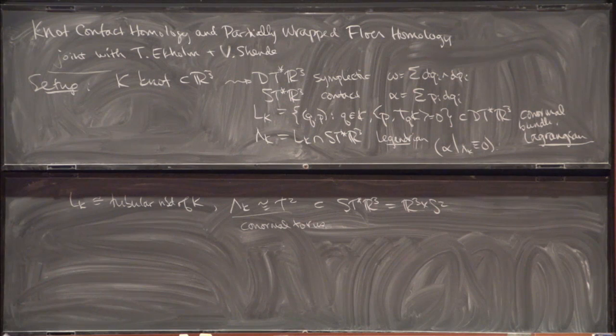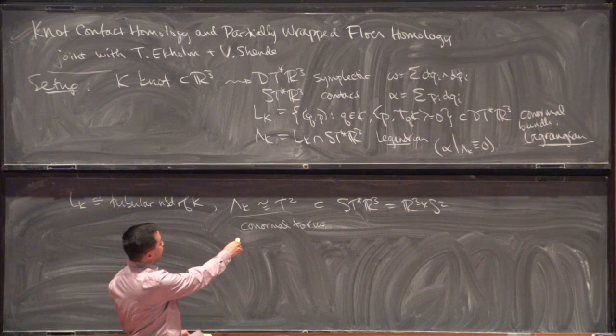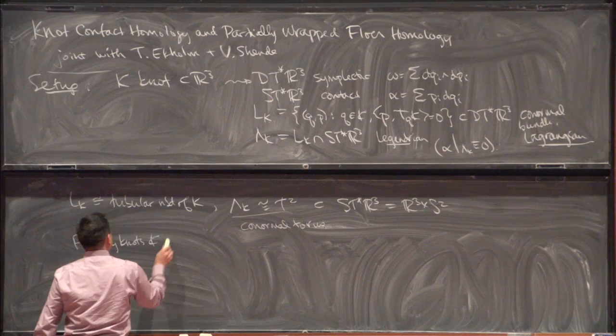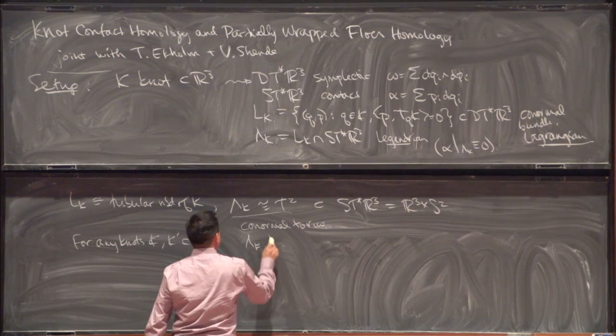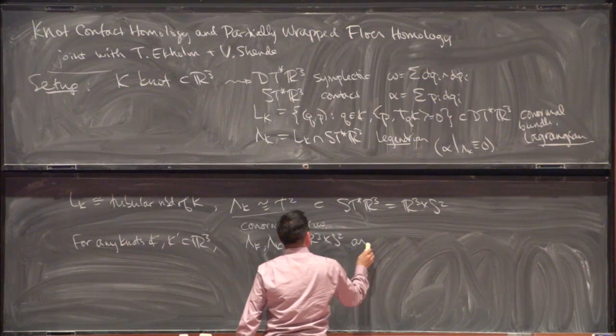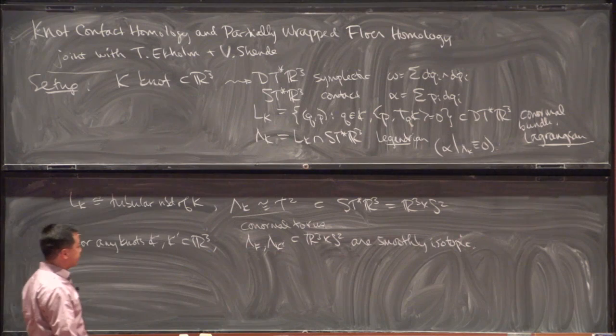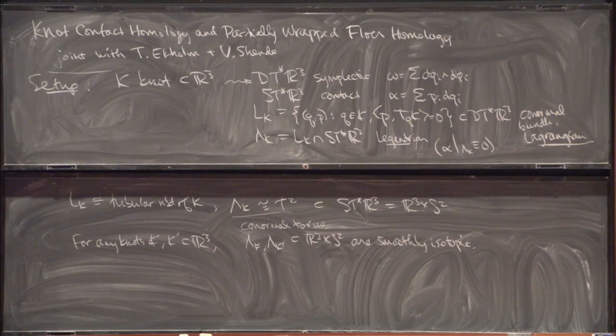If you forget about the contact structure, then this is just a topological two-torus sitting inside of this five-manifold. It turns out that for any two knots inside of R³, their tori are smoothly isotopic. So for any knots K and K' inside of R³, Lambda_K and Lambda_K' sitting inside of R³ × S² are smoothly isotopic. This is an easy topological exercise — essentially the co-dimension is high enough, they're co-dimension three submanifolds, and you can perturb the homotopy to get an isotopy.